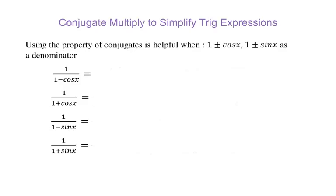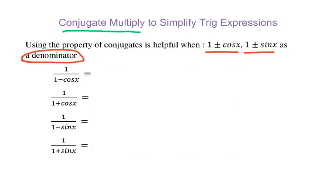Now let's introduce the conjugate multiply to simplify trig expressions or verify trig identities. The rule is: whenever you see 1 plus or minus cos x, or 1 plus or minus sin x, as a denominator, that is the signal for you to perform a conjugate multiply to simplify.